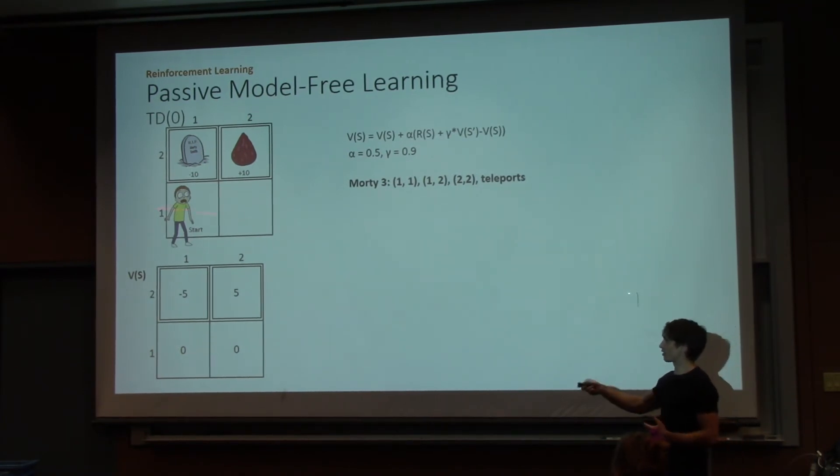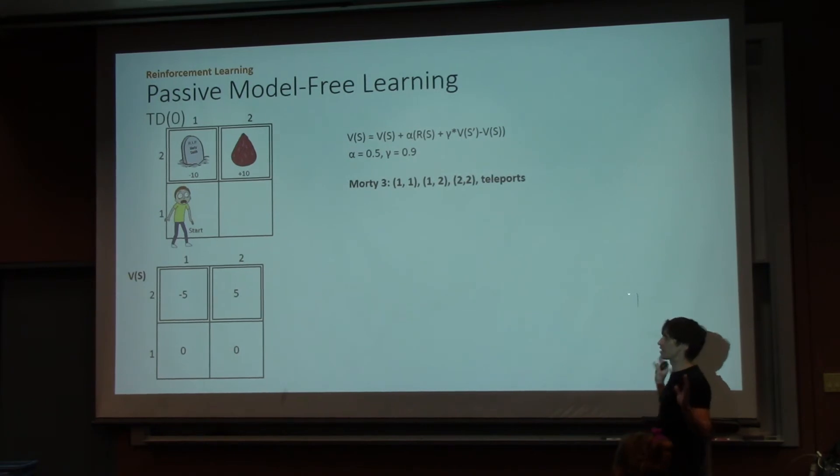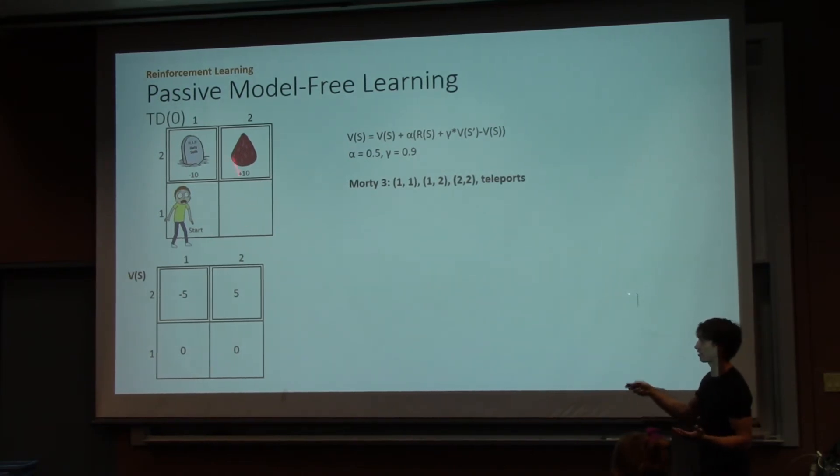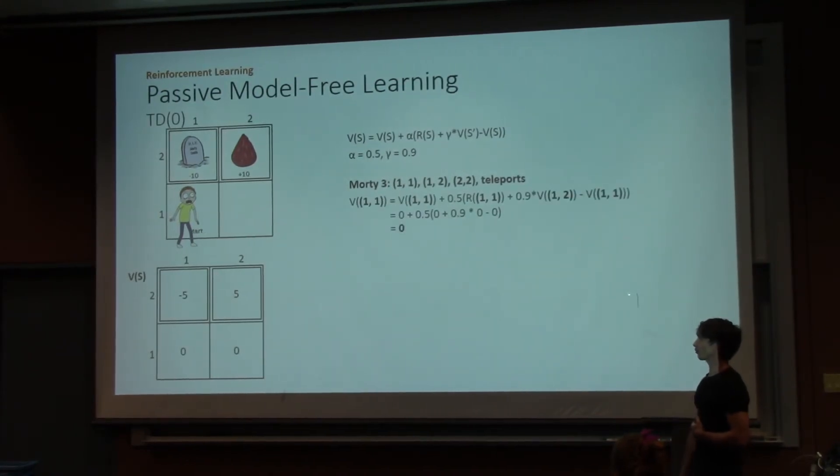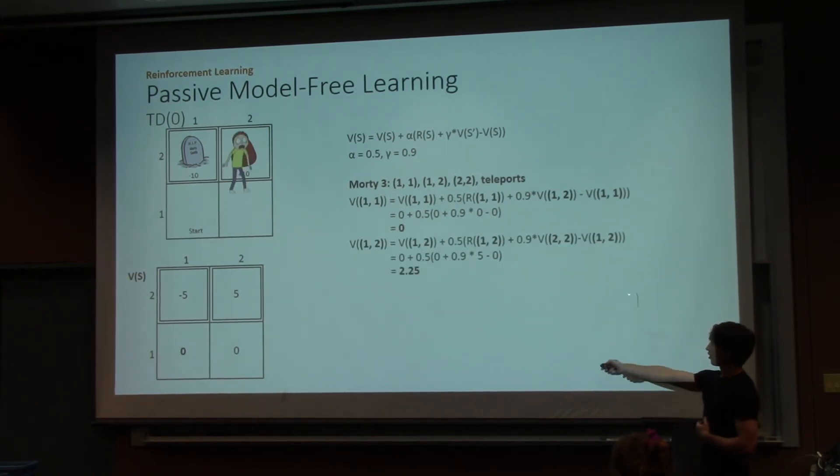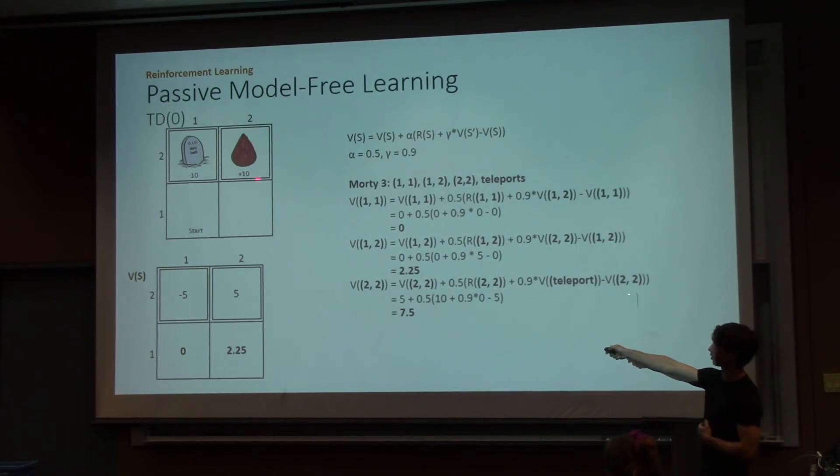Let's do one more Morty. Note here that these Mortys are all following some given policy. You never know what that policy is, but he has a policy that he's following. And this Morty is going to do the same thing as the last one. When this episode ends, you'll notice now that V(1-2) gets updated with a new value of 2.25, and V(2-2) now gets updated even closer to the actual return of 2-2 with a value of 7.5.